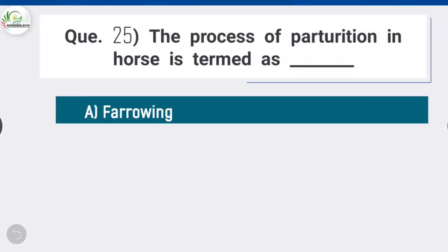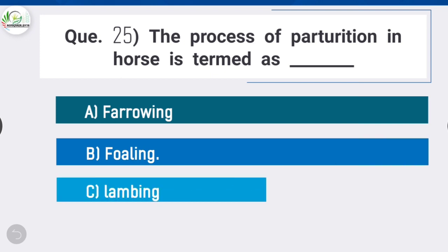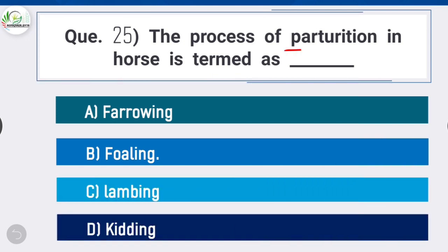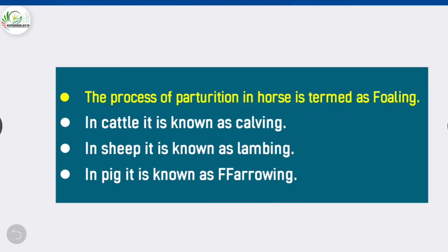Question 25: The process of parturition in horse is termed as foaling. In cattle it is known as calving, in sheep it is known as lambing, and in pig it is known as farrowing.